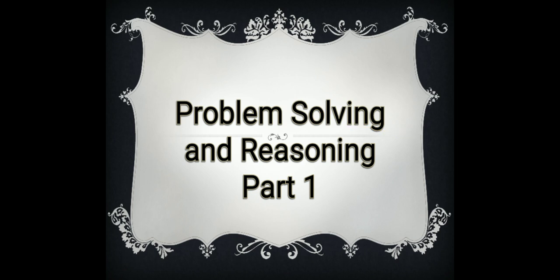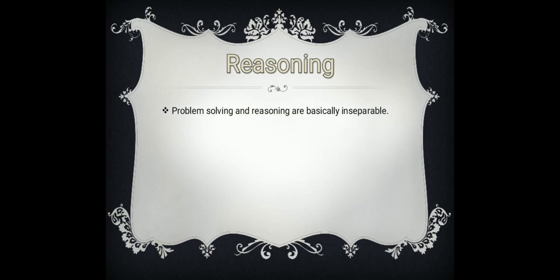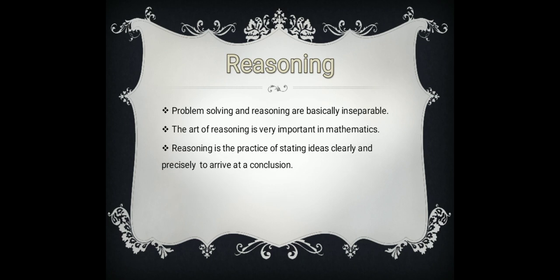We are now on our next lesson which is all about problem solving and reasoning. This lesson is subdivided into three main parts, but for this video we will just be discussing part one, which is about the different kinds of reasoning. Basically, mathematics is not just about numbers — much of it is problem solving and reasoning, and these two are inseparable. The art of reasoning is very important in mathematics because mathematics is established using proofs and reasoning. Reasoning is the practice of stating ideas clearly and precisely to arrive at a conclusion, and logic and reasoning are useful tools in decision making.